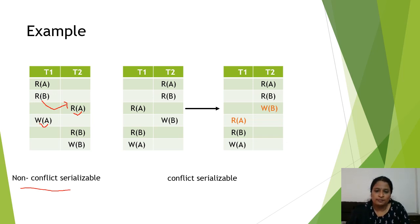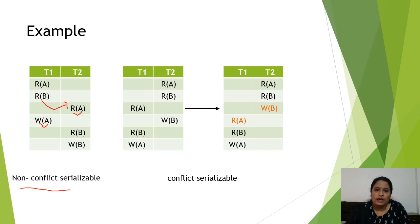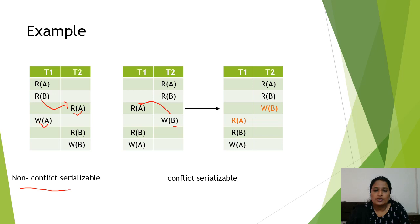Now let's look at the second example. Here too it is a Non-Serial type of schedule. In order to convert it into Serial, I am trying to swap Read of A with Write of B. Since they operate on different data — transaction 1 deals with A, and transaction 2 deals with Write on data B — it is possible to swap them. So we swap Write of B with R of A, and this Non-Serial type is converted into Serial type. Therefore, we can call this schedule Conflict Serializable.